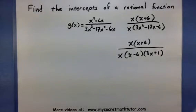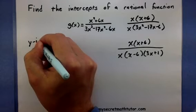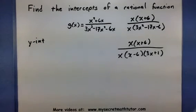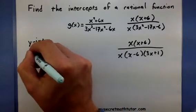Alright. So one of the first things we might want are the y intercepts. Now to find a y intercept you're basically going to take something like the original and set x equal to 0.